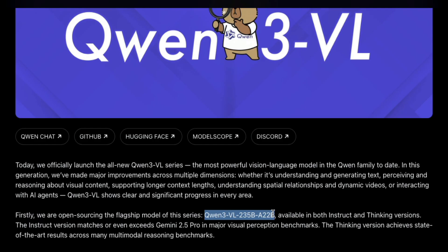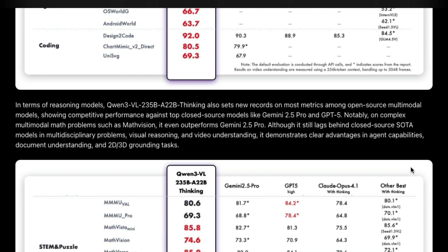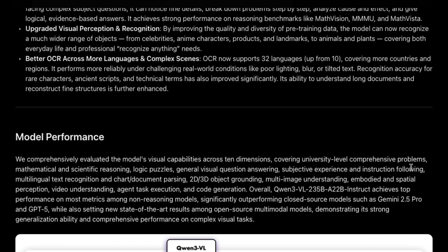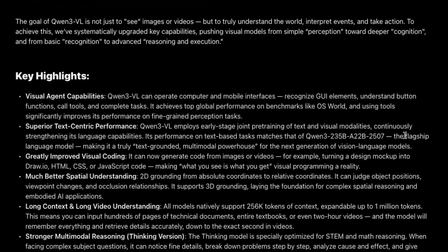The open sourced instruct version of the model even exceeds Gemini 2.5 Pro on a lot of different visual perception benchmarks. In my opinion, I usually consider Gemini 2.5 Pro as the best model. They have compared Qwen3VL with Gemini 2.5 Pro, GPT-5, Claude Opus 4.1, and other top models, and they have not left out any benchmark. I don't think there is any cherry picking here. I want to congratulate the Qwen team for being open not just in releasing the model but also providing benchmarks where all models are compared.